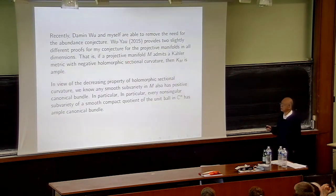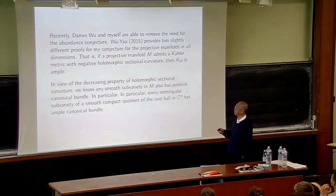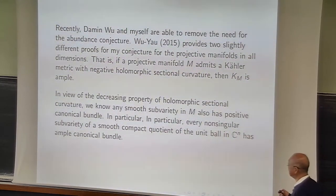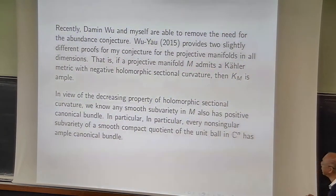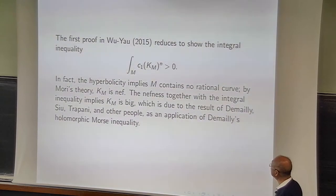Going to the projective tangent bundle and defining holomorphic sectional curvature in terms of the first Chern class of the tautological line bundle there, one can ask whether it is negative or positive depending on the definition. With that kind of assumption, in a more general algebraic geometry setting, I don't know how to prove this statement. So there is much room for improvement.